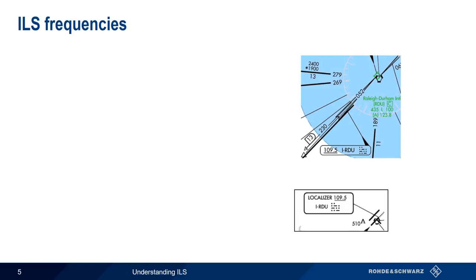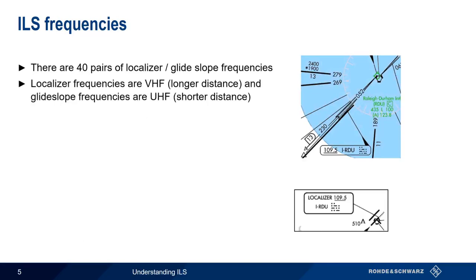Let's begin our technical discussion of ILS by discussing the frequencies used in ILS. Localizer and glide slope frequencies are paired, with 40 possible pairs of frequencies. As we'll see, the localizer signal is acquired further away from the runway than the glide slope signal, so localizer signals are in the VHF range, and glide slope signals are in the UHF range. More specifically, localizer frequencies are 108.1 to 111.95 MHz, whereas glide slope frequencies are 330.95 to 334.7 MHz.